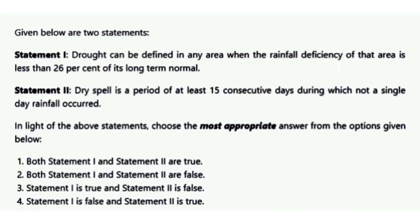The next question gives two statements. Statement 1: drought can be defined in any area when the rainfall deficiency of that area is less than 26 percent of its long-term normal. Statement 2: a dry spell is a period of at least 15 consecutive days during which not a single day of rainfall occurred. The correct answer is option 4 — Statement 1 is false and Statement 2 is true.